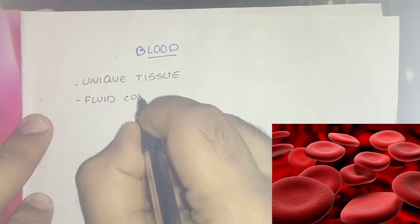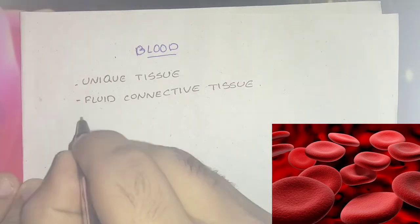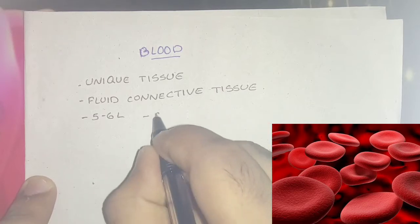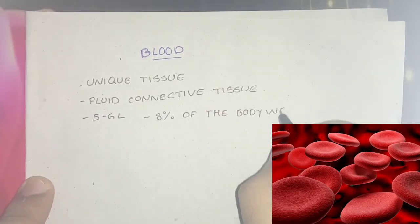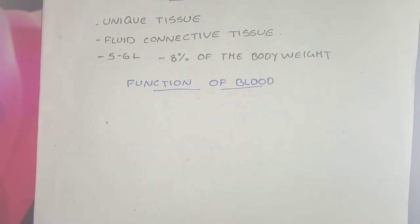It is a fluid connective tissue which is red in color, opaque, and alkaline in reaction. The arterial blood is bright red due to oxyhemoglobin and venous blood is dark due to the presence of reduced hemoglobin. It is 5 to 6 liters in adult males and constitutes about 8% of body weight.